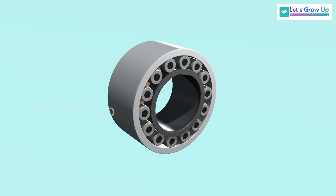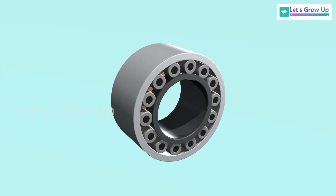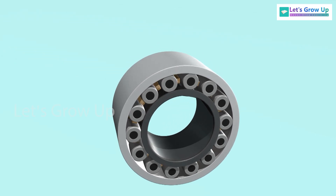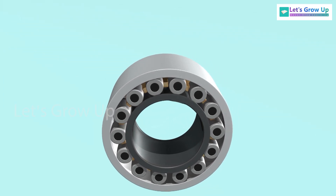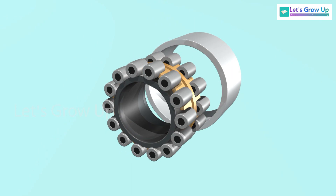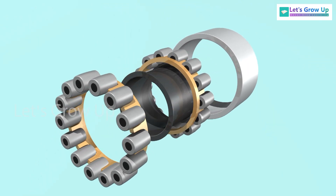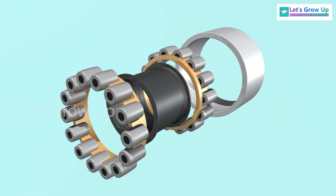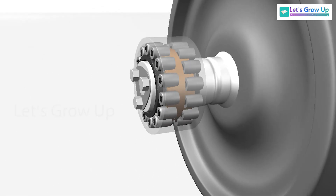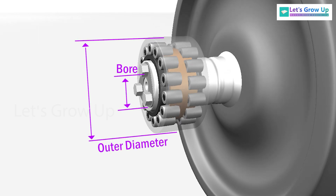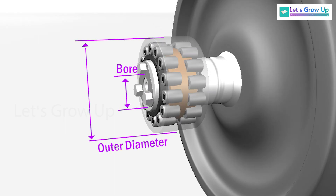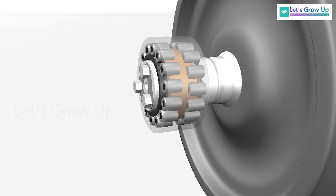The spherical roller bearing is a rolling element bearing that permits rotation with low friction and permits angular misalignment. It supports the rotating axle in the bore of the inner ring, which may be misaligned in respect to the outer ring.